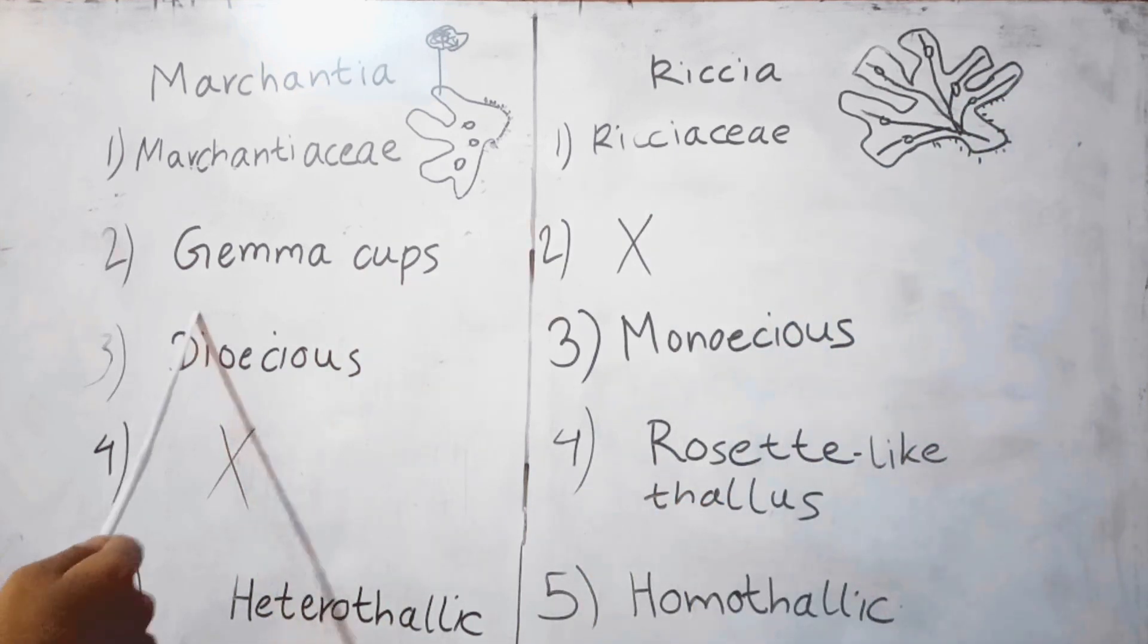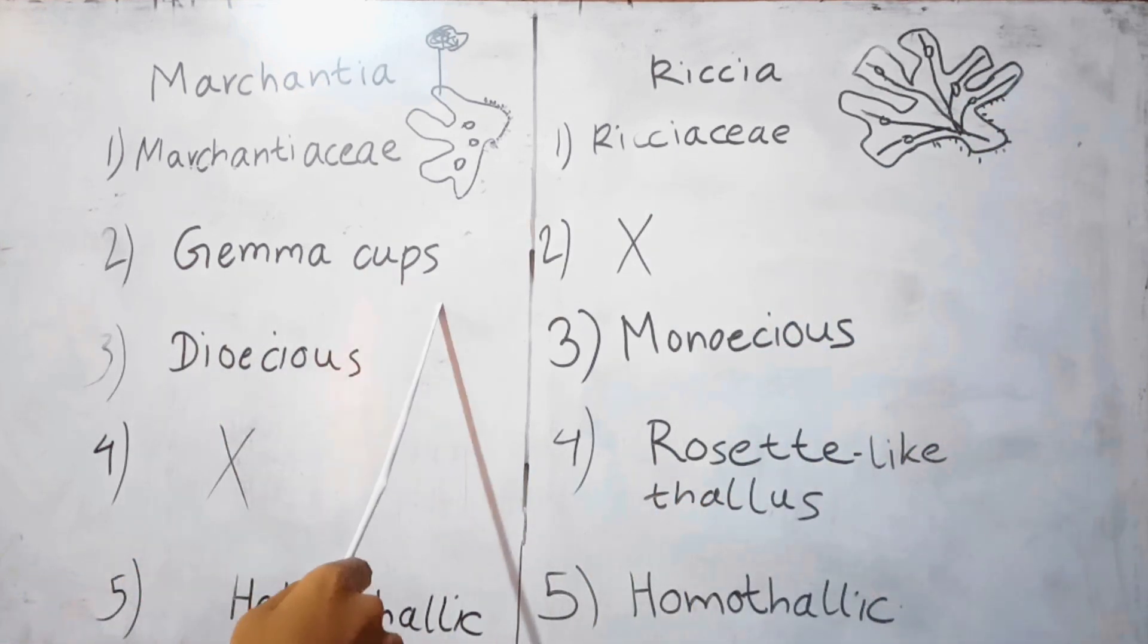In Marchantia, gemma cups are present. Gemma cups help in asexual reproduction. In Riccia, gemma cups are absent.